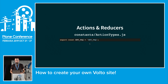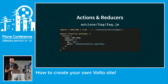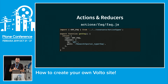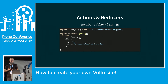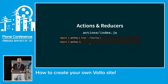For example, we're doing an FAQ module. We want to make a getFaq call, so we create an action for it. We have the constant, then the action itself — returning an action called with the type GET_FAQ, mentioning where the request should go: it's a GET request and the path queries for the portal type FAQ, returning all FAQ items.